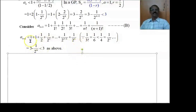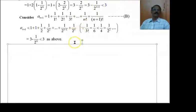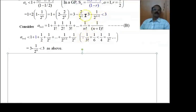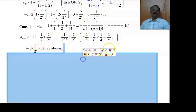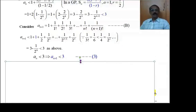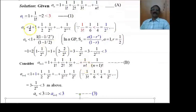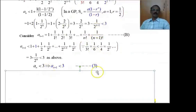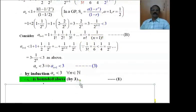This is the sum of first n+1 terms of a GP, which equals 3 - 1/2ⁿ, and since we now have 1/2ⁿ instead of 1/2^(n-1), this is still less than 3. So a₁ < 3, aₙ < 3, and aₙ₊₁ < 3. Hence by mathematical induction, aₙ < 3 for all n in ℕ. Therefore, aₙ is bounded above by 3.